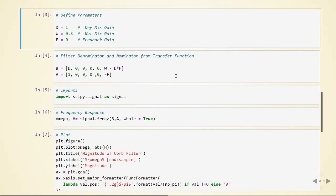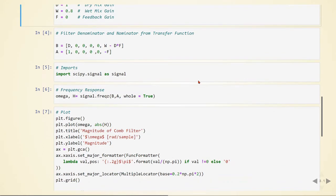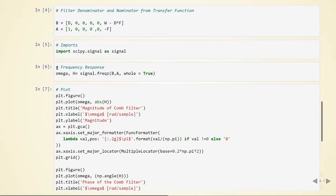Then we are setting our denominator and numerator for the transfer function. Once again, we are going to use scipy.signal to calculate the frequency response. This time I'm using whole equals to true, so I will calculate the frequency response from 0 to 2π instead of 0 to π.